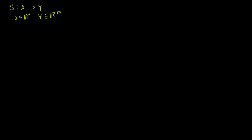We know that if S is a linear transformation, it can be represented by a matrix-vector product. So we can write S of some vector x as equal to some matrix A times x. Whatever vector x we input is going to be a member of Rⁿ.